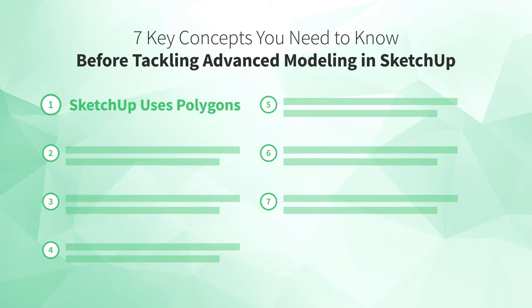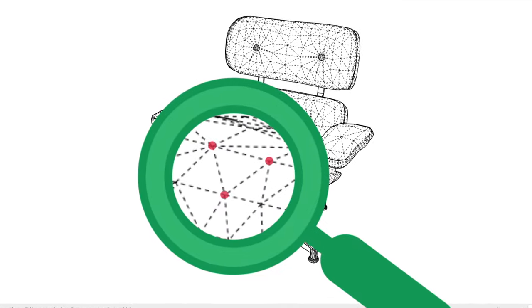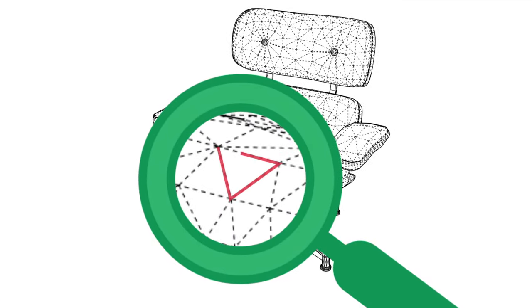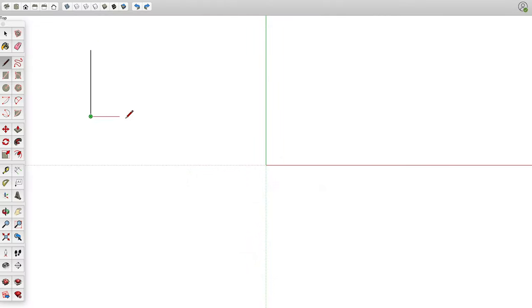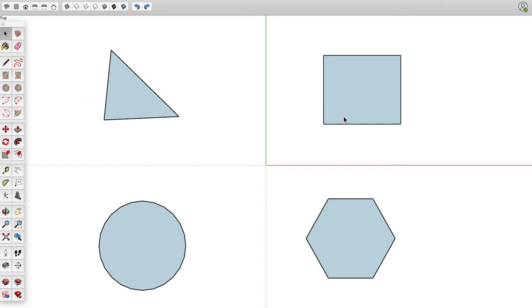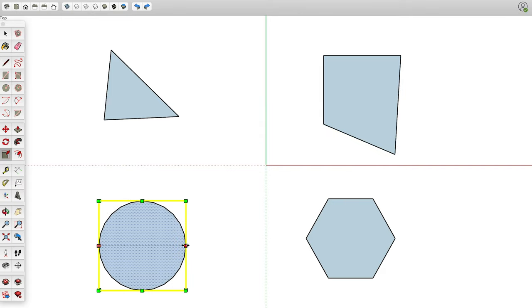So what are the seven key concepts you need to know before tackling advanced modeling in SketchUp? Let's start with number one: SketchUp uses polygons. Everything you draw in SketchUp is made up of endpoints or vertices, straight edges, and flat two-dimensional faces. Taken together, each face along with its edges and endpoints is called a polygon. So all of the drawing tools in SketchUp help you create the endpoints, edges, and faces that form polygons. And all of SketchUp's editing tools help you change the position and orientation of those endpoints, edges, and faces.